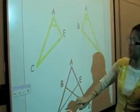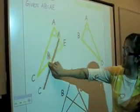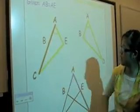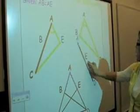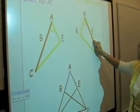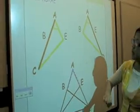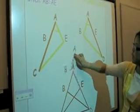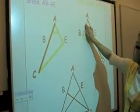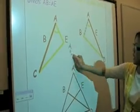we are given that side AC is congruent to side AD. Next, they are also telling us that side AB is congruent to side AE.